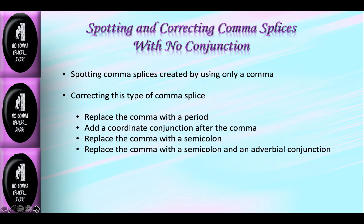You can also replace the comma with a semicolon and an adverbial conjunction. I provided you with a handout titled 'Lists of Words Important in Grammar.' On that list, find the list of conjunctive adverbs, which are also called adverbial conjunctions. You can join two independent clauses with a semicolon and an adverbial conjunction, and it's also okay to begin a sentence with an adverbial conjunction.